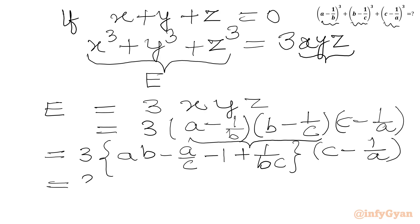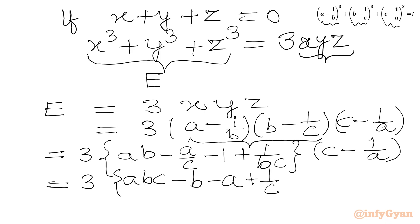Now multiplying this result with (c minus 1/a), we get: 3 times [abc minus b minus a minus 1/c minus c plus 1/a plus 1/b minus 1/(abc)].